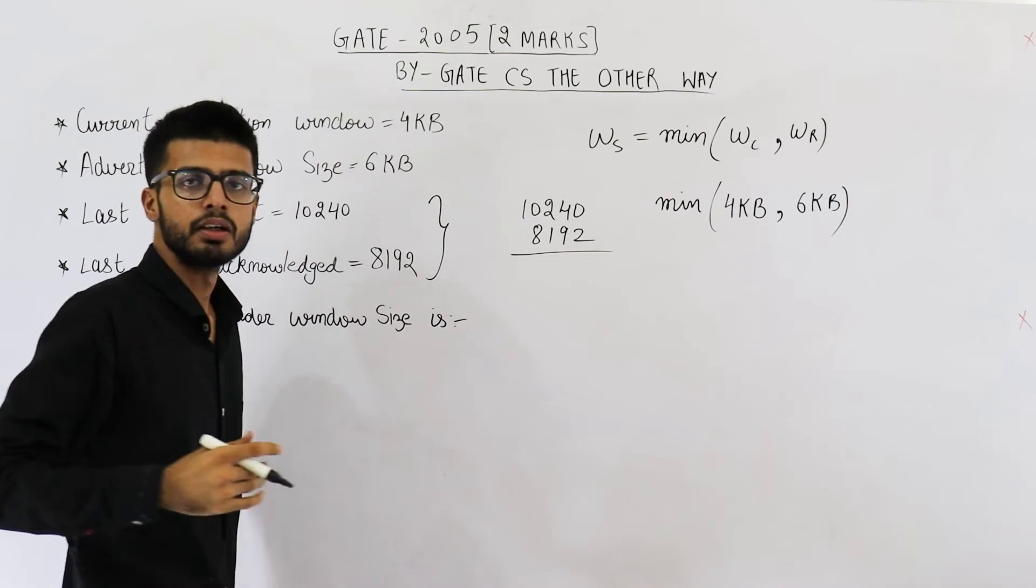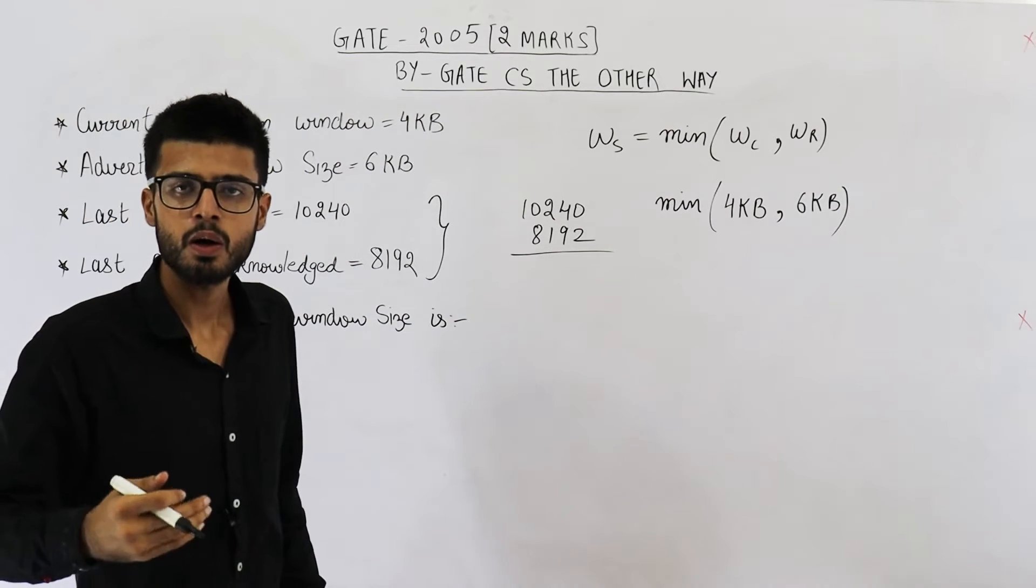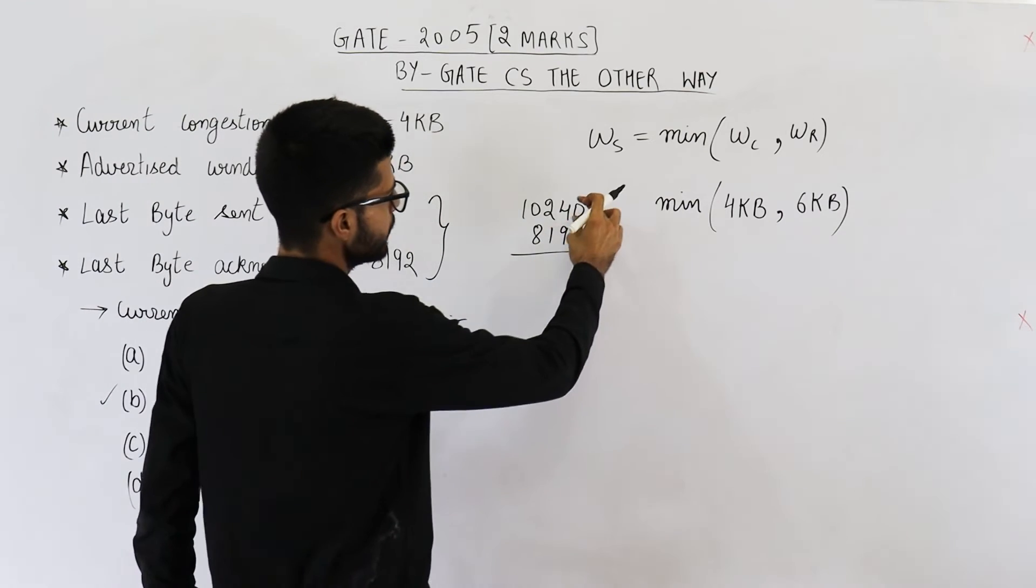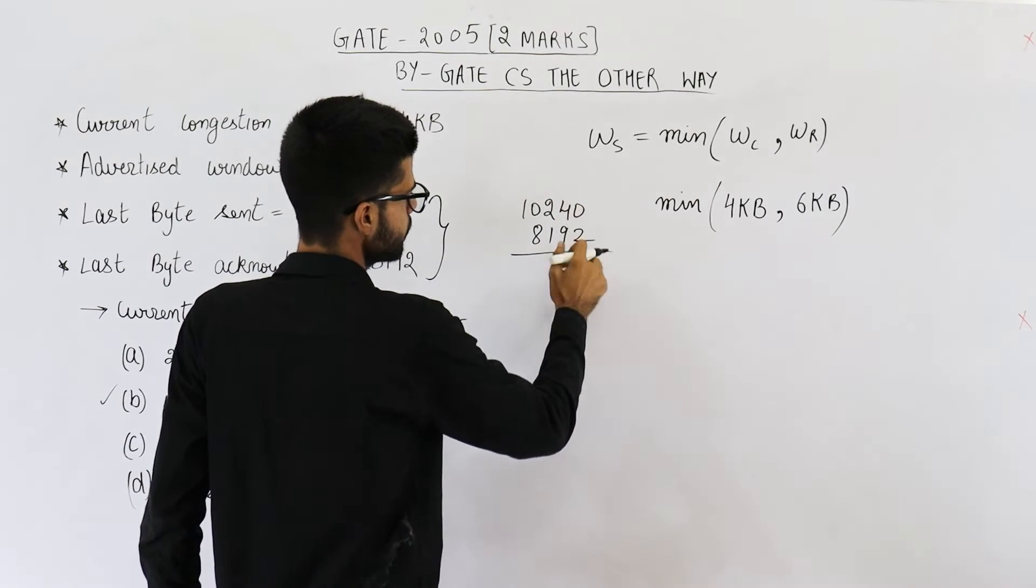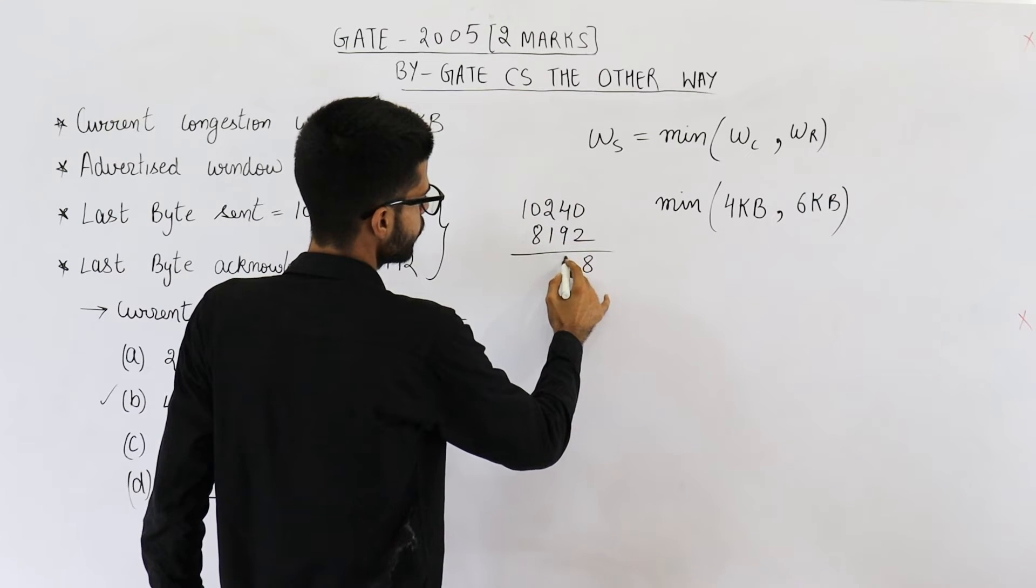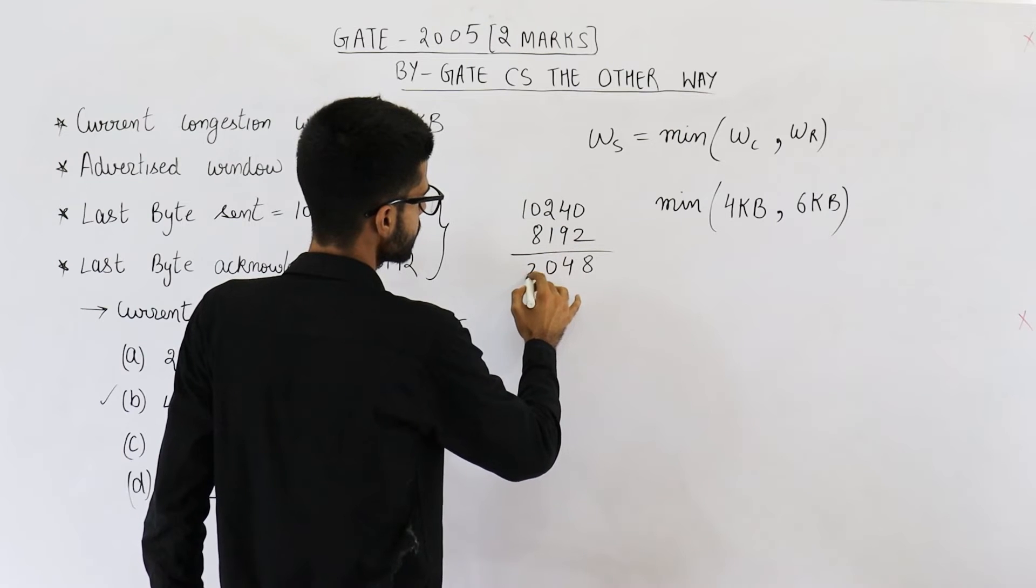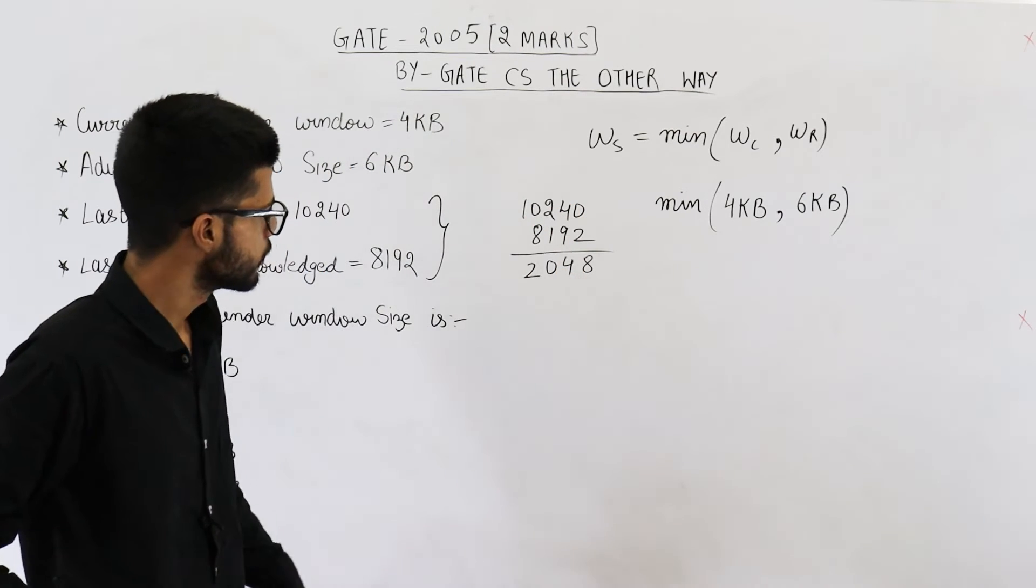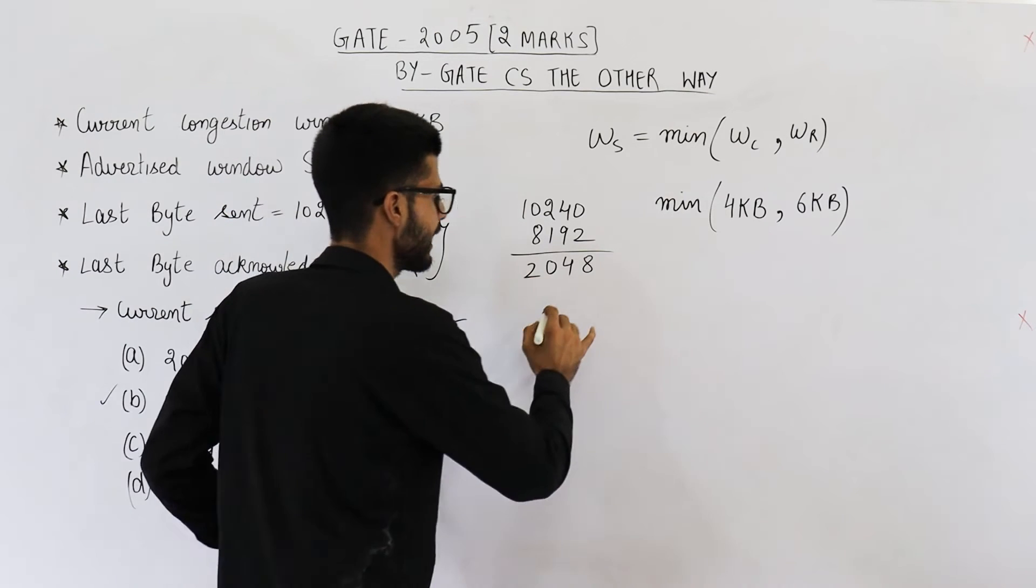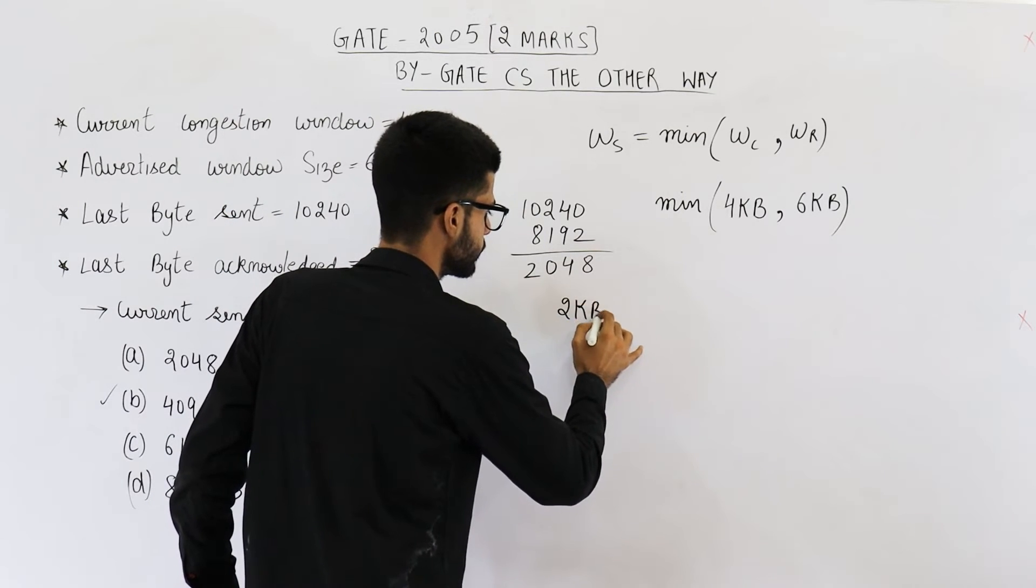That means what is the amount of data or how many bytes are unacknowledged till now. So it will be this minus this. So 10 minus 2 is 8, then this will be 4, 1 minus 1 is 0, 10 minus 8 is 2. So 2048 bytes are unacknowledged till now. That means 2 KB.